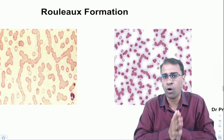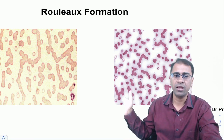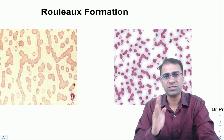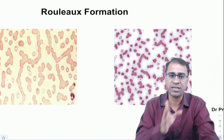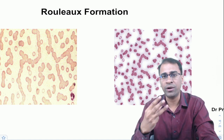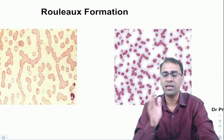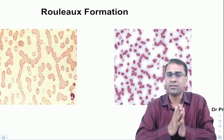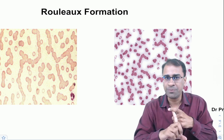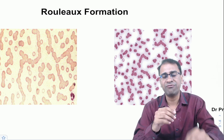Multiple myeloma is a plasma cell neoplasm showing rouleaux formation on peripheral smear. Key translocations include 13q deletion, t(11;14), t(4;14), and t(14;16) — of these, t(11;14) carries a good prognosis. Remember the CRAB criteria: C for hypercalcemia, R for renal failure, A for anemia, and B for bony lytic lesions. The SLiM criteria define myeloma based on 60% plasma cells, involved free light chain ratio >100, and MRI showing two or more lesions >5mm.